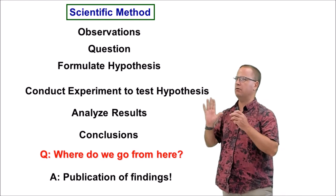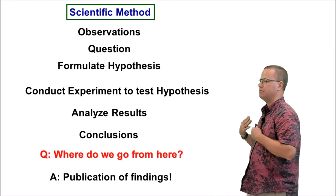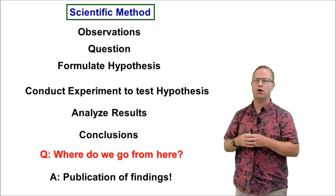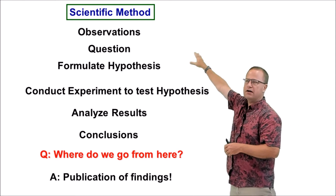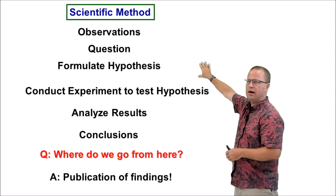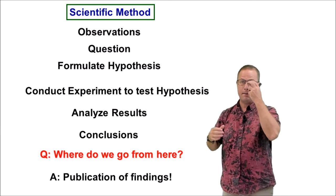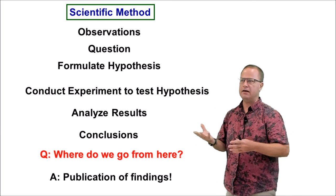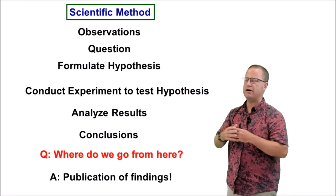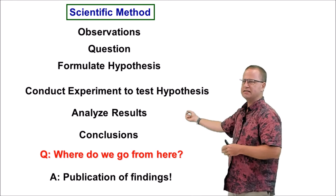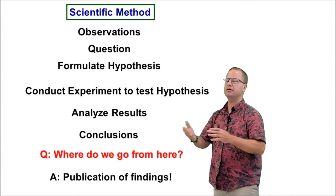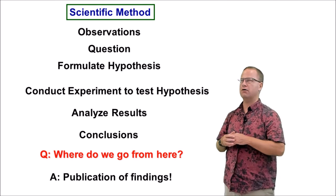To recap what we talked about last time: the scientific method has about six or seven steps. We start with an observation — for example, observing that our car wouldn't start. We come up with a question — why doesn't the car start — and then we formulate a hypothesis: we think the car's not starting because the battery is dead. We then conduct an experiment to test that hypothesis. We replace the battery, and then test the result by turning the key. If the car starts, we can say for sure it was the battery.